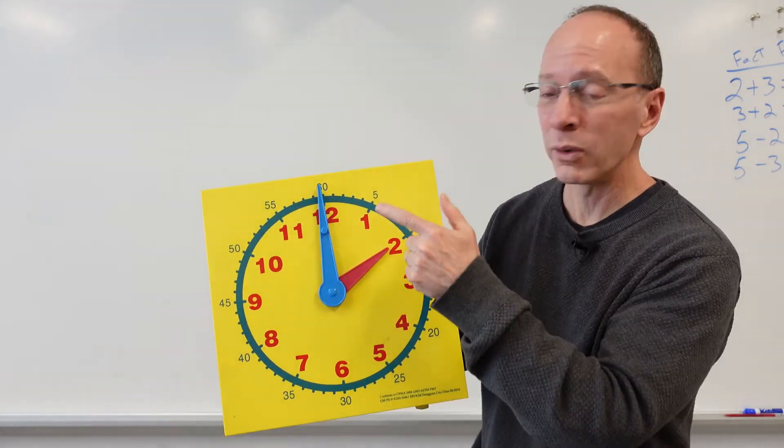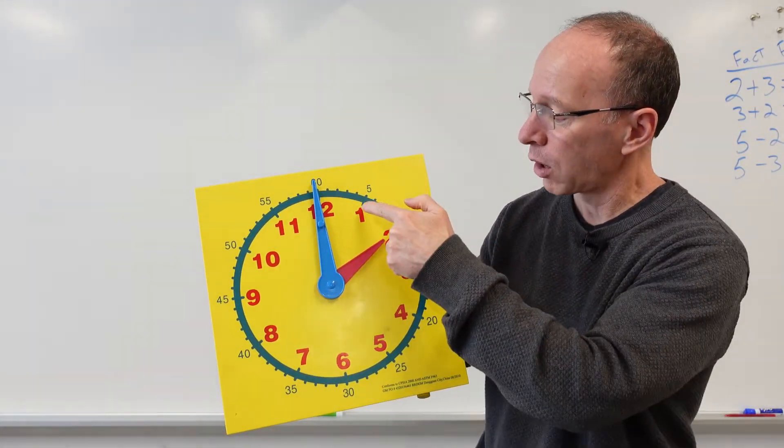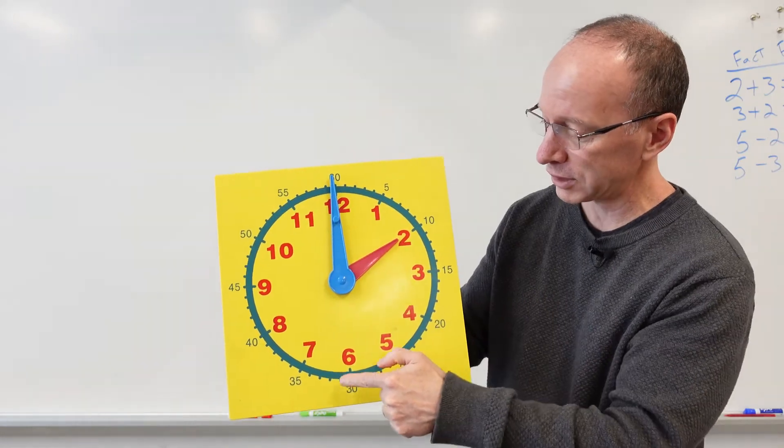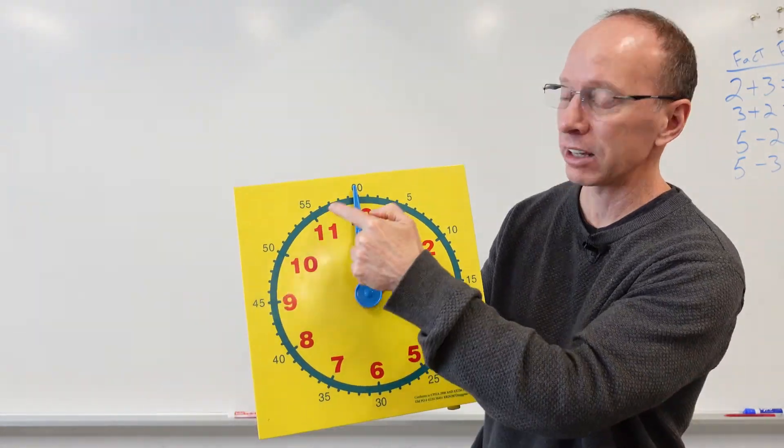Remember, we got 12 numbers here. We got 1, 2, 3, 4, 5, 6, 7, 8, 9, 10, 11, 12.